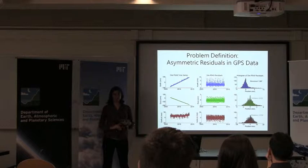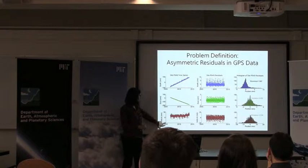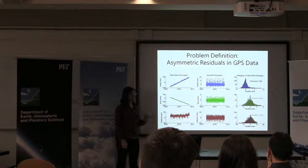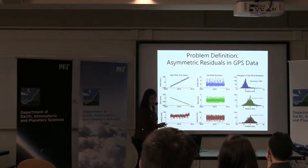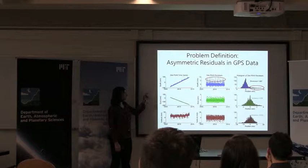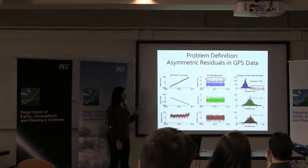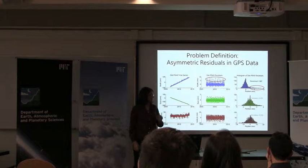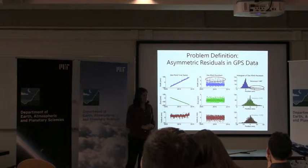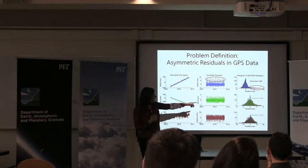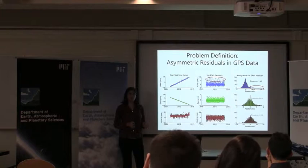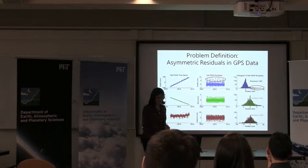Here is an example GPS station, P549 in Southern California, showing position estimates in the north, east, and vertical components from about 2007 to the present. An interesting thing to note is that there are many more position errors north of the station than south — when this station has a bad day, more often than not the errors are north, not south. When displayed as a histogram, you can also see it's more likely to have position errors east of the station rather than west. Errors in the two-to-four millimeter range are much more likely than errors in the minus-two-to-four millimeter range, which basically don't happen.